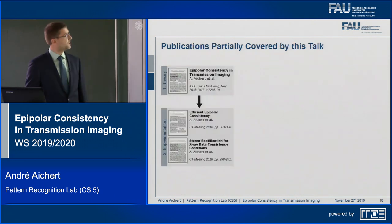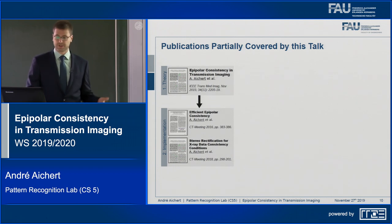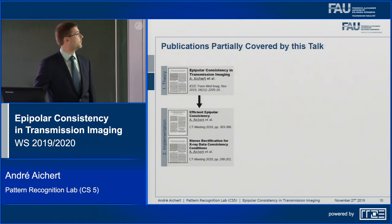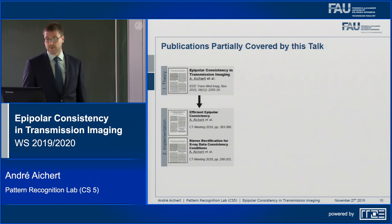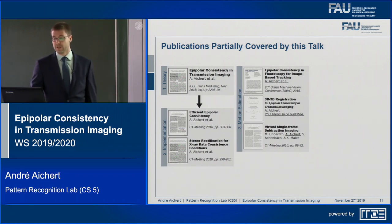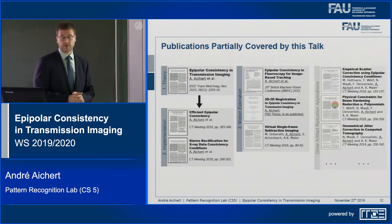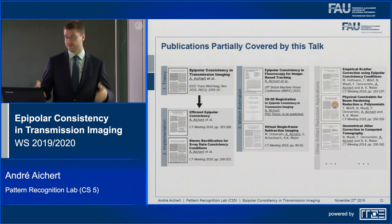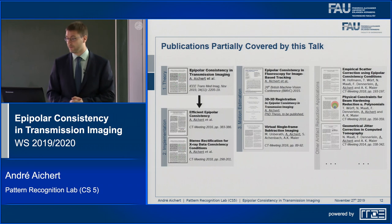Briefly, the publications I'll be covering: there is a mostly theoretical publication concerning epipolar consistency in transmission emission imaging, published in IEEE Transactions on Medical Imaging, and then implementation-related works — practical considerations for building a system that exploits epipolar consistency. The focus will be on three exemplary applications: tracking in fluoroscopy, 3D-3D registration, and virtual single-frame subtraction imaging for the heart to estimate gating information. There are many other publications on epipolar consistency developed since my TMI publication, which will be mentioned but are not the focus.